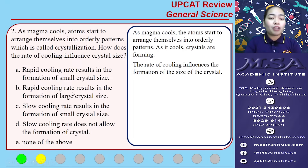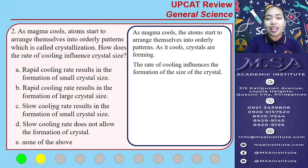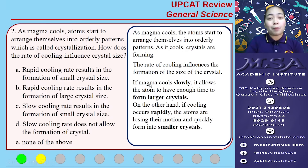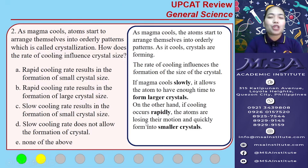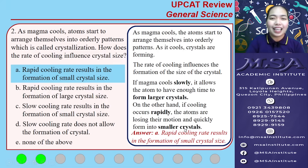Letter B states that a rapid cooling rate results in a large crystal size, and letter C states that a slow cooling rate results in a small crystal size. Since both indicate the same concept, we can eliminate them. If magma cools slowly, atoms have enough time to form larger crystals. If cooling occurs rapidly, atoms quickly form into smaller crystals. The answer for number two is letter A.